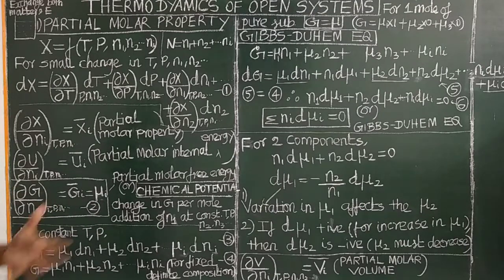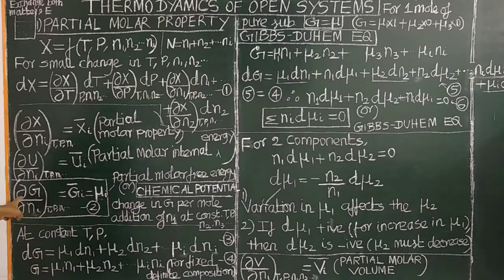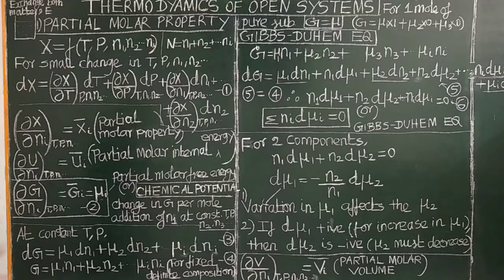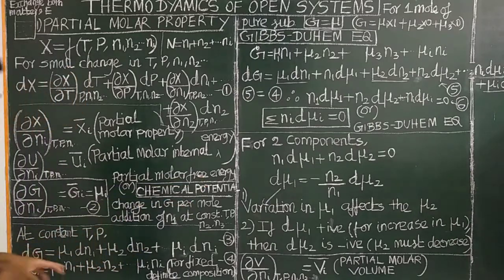What is chemical potential? Chemical potential is the change in free energy upon addition of 1 mole of component Ni at constant temperature, pressure, and all other moles N1, N2, etc. This is nothing but the chemical potential.